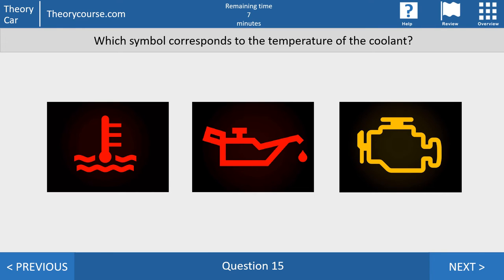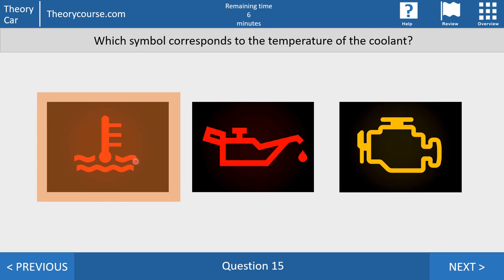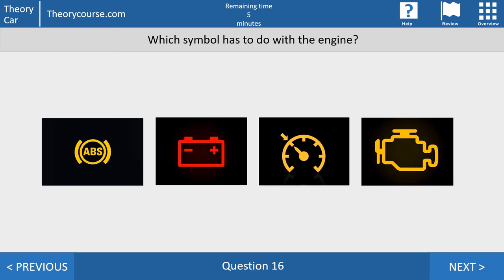Question 15. Which symbol corresponds to the temperature of the coolant? Answer A. Answer B. Answer C. No, there is no answers. You must put a symbol at the CBR. And the right symbol is the first one. This is like a thermometer and a thermometer has to do with the temperature of the coolant. The second symbol has to do with the oil. And the last symbol, if this burns on your dashboard, then there is something wrong with your engine. And if the CBR asks you what should you do if there is a red light on your dashboard, then you have to stop immediately at a safe place.